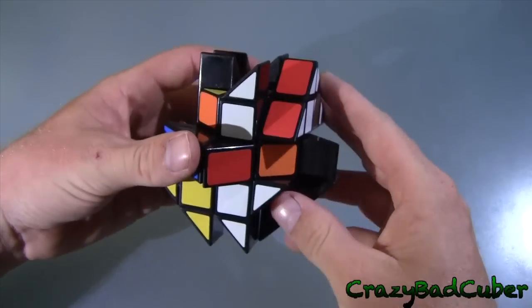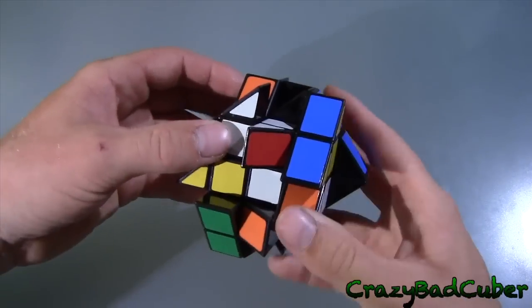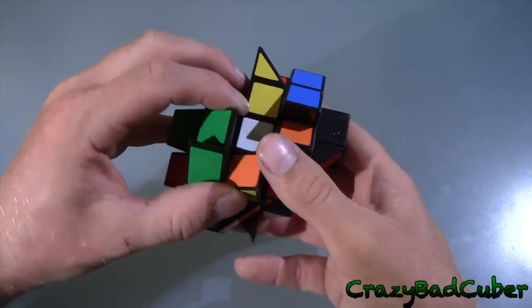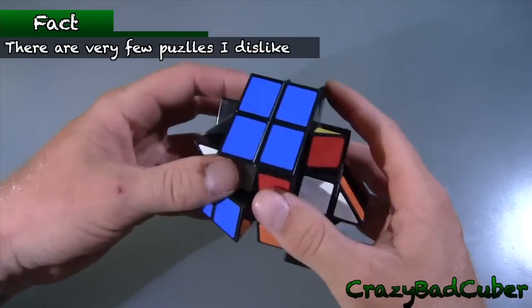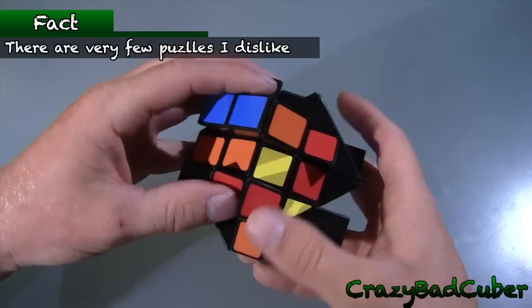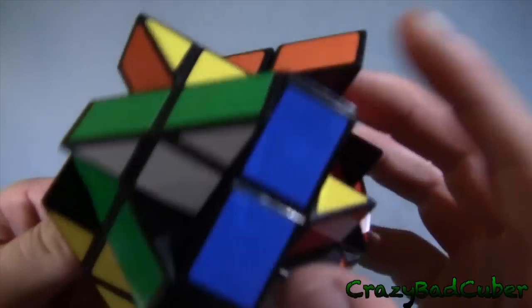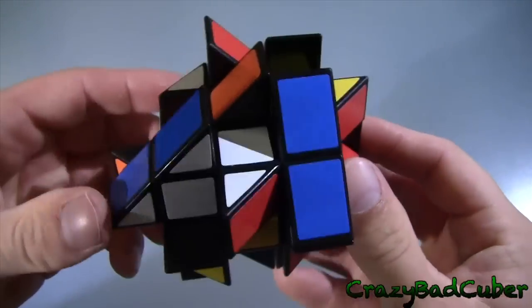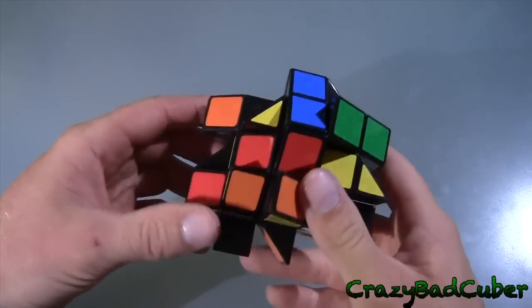She knows the type of puzzles I like, and I could pretty much be guaranteed that I would like it no matter what it was, because she knows I like such a wide variety of types of puzzles. Here we go, I'm calling that scrambled. Look at that thing, that is one big scrambled cube.